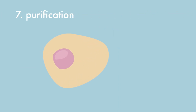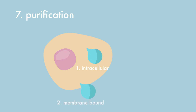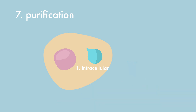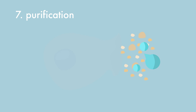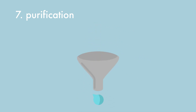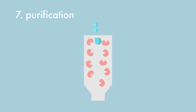The target protein can be situated within the cell, can be membrane-bound, or can be extracellular. If the recombinant target protein is situated within the cell, the protein can be obtained through cell lysis. After this, a filtration step is needed to discard the debris and cell leftovers. At the end, affinity chromatography will be used to purify the recombinant target protein.